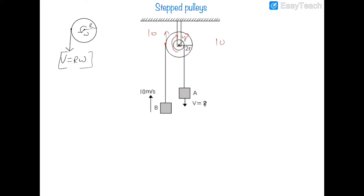We can write that 10 = 2rω — this is the first equation, since block B is on the cylinder of radius 2r. The velocity of block A's point is v = rω. Dividing, we get 2v = 10, therefore v = 5 meters per second.